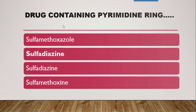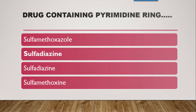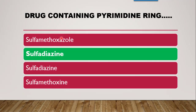Next question: the drug containing a pyrimidine ring is — sulfamethoxazole, sulfadiazine, or sulfamethoxine? The correct answer is sulfadiazine. Sulfadiazine contains a pyrimidine ring at the N1 position of the sulfanilamide moiety.